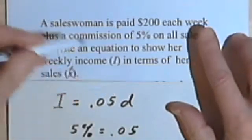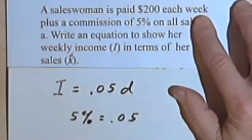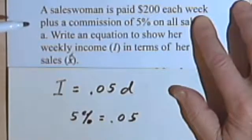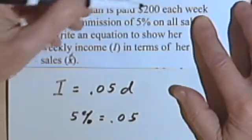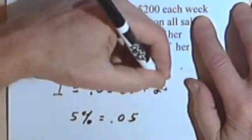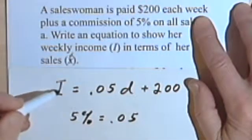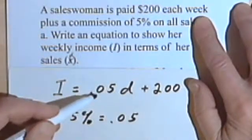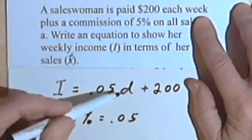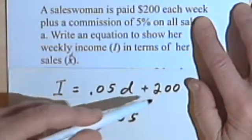But besides that, she also gets $200 a week. This is a lot like the electrician, who besides earning money for each hour he worked, also got $80 just for showing up. She gets $200 just for showing up at work. So that means the entire equation is going to be I, her income, equals .05d, 5% of her sales, plus $200.